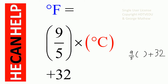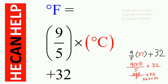The temperature in degrees Celsius is 37, so this is 9 times 37 divided by 5 plus 32. 9 times 37 is 333, so 333 divided by 5 plus 32. 333 divided by 5 is 66.6, so 66.6 plus 32, and that is equal to 98.6.